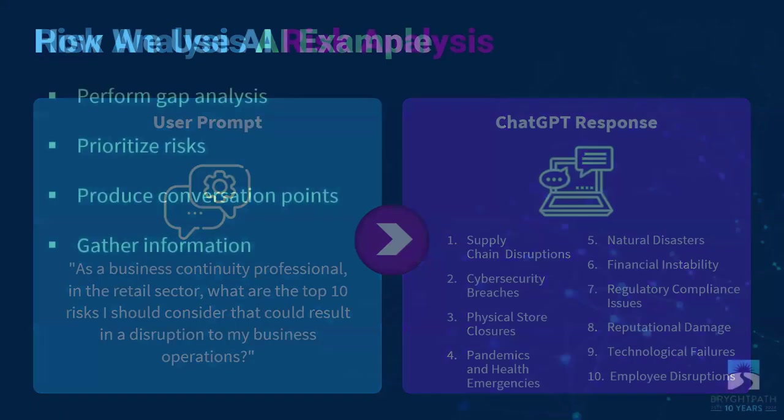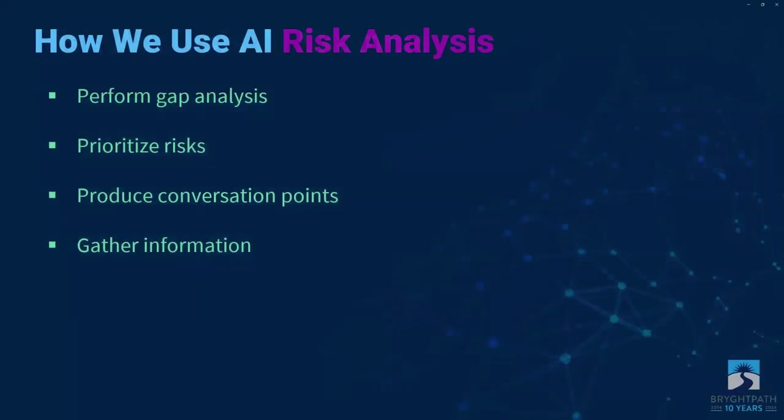AI can help us perform gap analysis, prioritize risks, and produce conversation points, as well as help gather information without having to search ourselves. We can prioritize risks by asking what are the main risks this company could face, like the list we showed from ChatGPT, and then perform a gap analysis. Since I don't have a lot of personal experience with certain natural disasters, I can put into ChatGPT: what am I missing, what should I be looking into that isn't listed here as a risk for this specific natural disaster? So it's really helpful for us here at Bright Path.